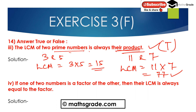4th part: If one of two numbers is a factor of the other, then their LCM is always equal to that factor. This statement is false.